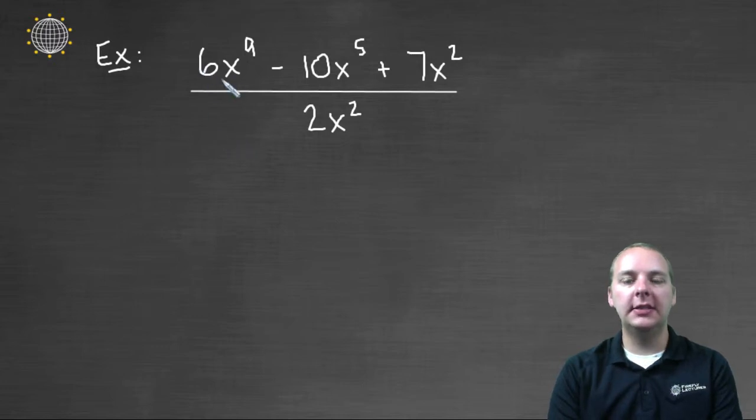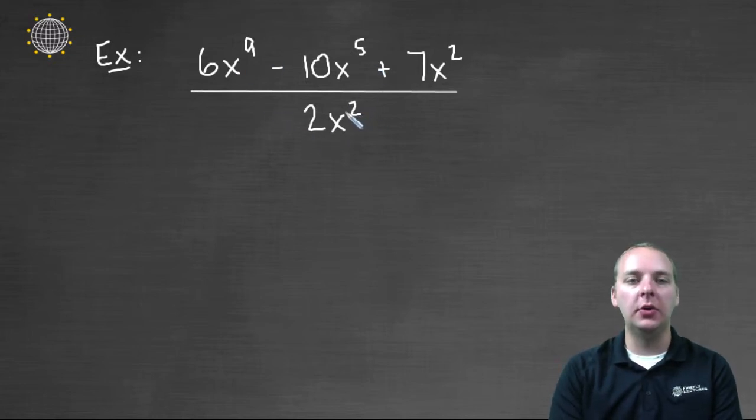Here we have six x to the ninth, minus ten x to the fifth, plus seven x squared, that's a polynomial, divided by two x squared, which is a monomial.